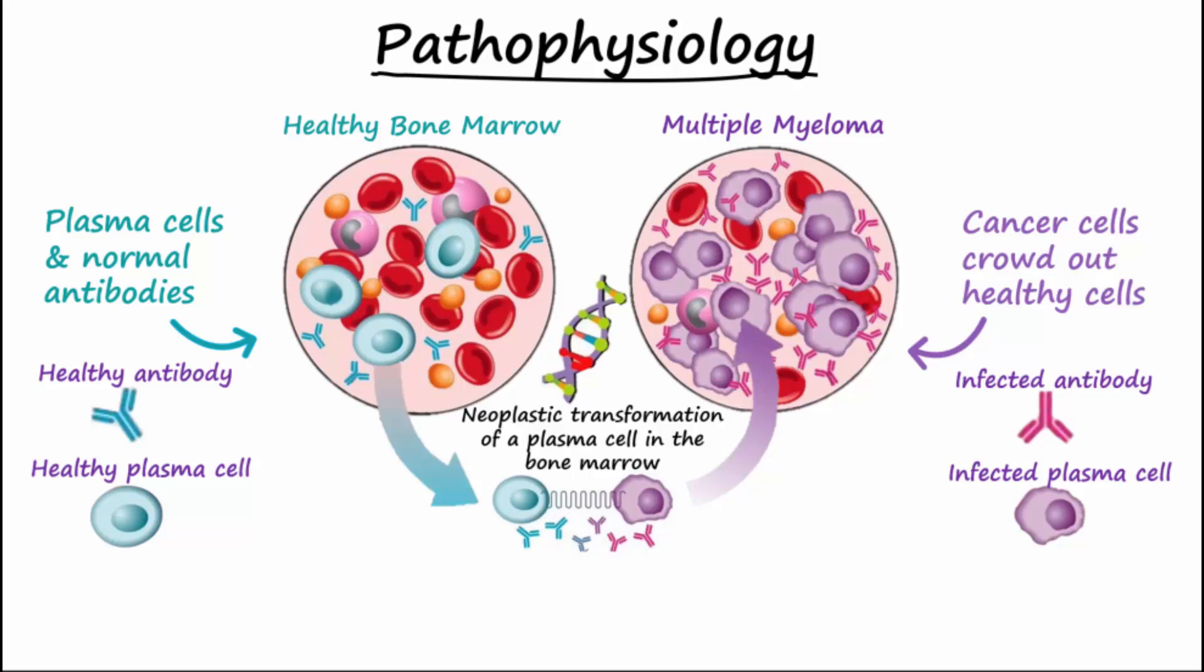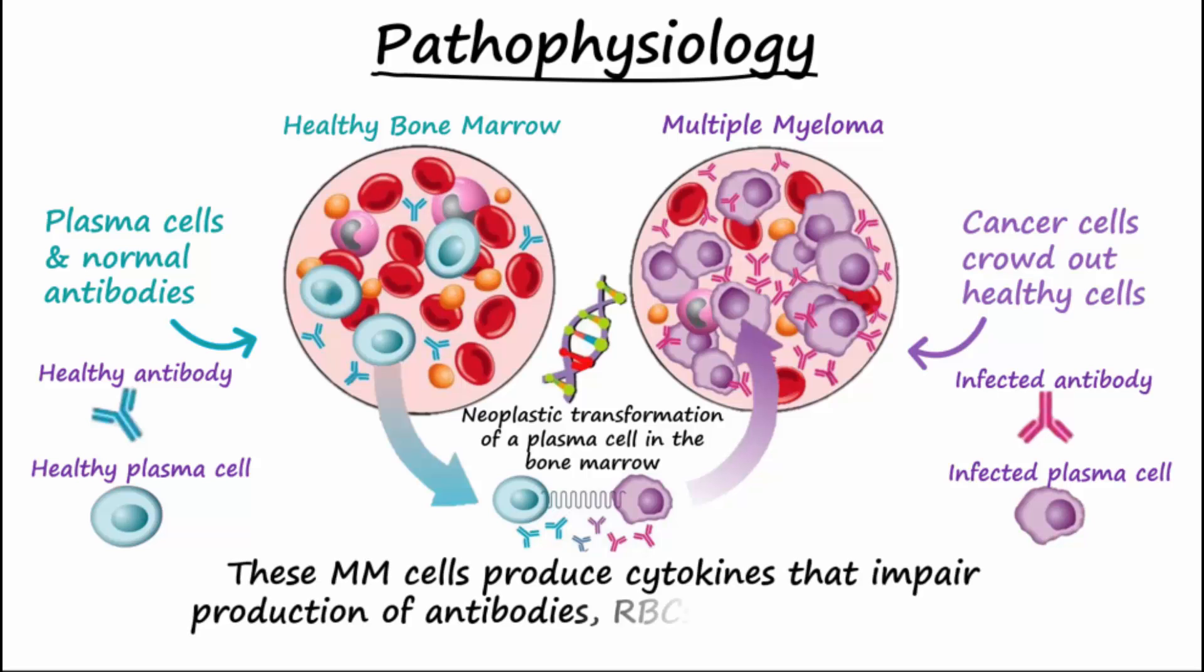These multiple myeloma cells also produce abnormal cytokines that impair production of antibodies, red cells, white cells, and platelets.